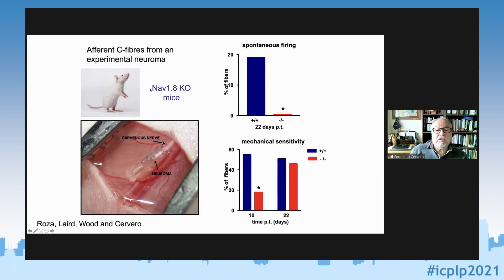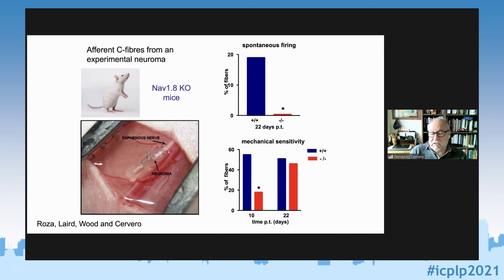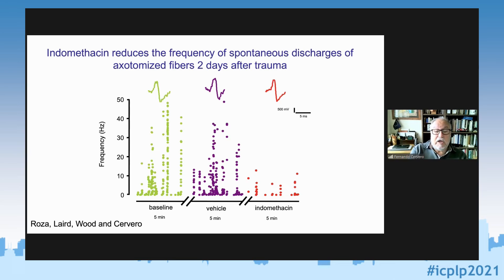Neuromas after nerve cutting have two properties: spontaneous activity and mechanical sensitivity — the Tinel sign, where touching the neuroma produces a sensation. We studied genetically modified mice with the Nav1.8 sodium channel knocked out, and in these mice the spontaneous firing completely disappeared but mechanical sensitivity returned to normal. This shows that spontaneous firing and mechanical sensitivity are produced by different mechanisms. Furthermore, giving anti-inflammatory agents reduced the spontaneous activity, showing there is also an inflammatory component contributing to the abnormal sensitivity in the stump or neuroma.